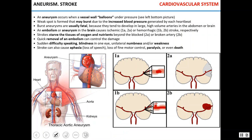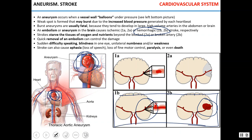Another interesting pathology is aneurysm. Due to high pressure, the vessel balloons outward, creating a weak spot where the vessel wall is very thin. If blood pressure suddenly increases, it may cause the blood vessel to burst. If this occurs in the brain, it causes hemorrhagic stroke. Aortic aneurysm, if it bursts, leads to massive bleeding and blood loss that is very hard to mitigate. Cerebral aneurysm leading to hemorrhagic stroke is extremely hard to treat because blood causes massive damage to the brain.